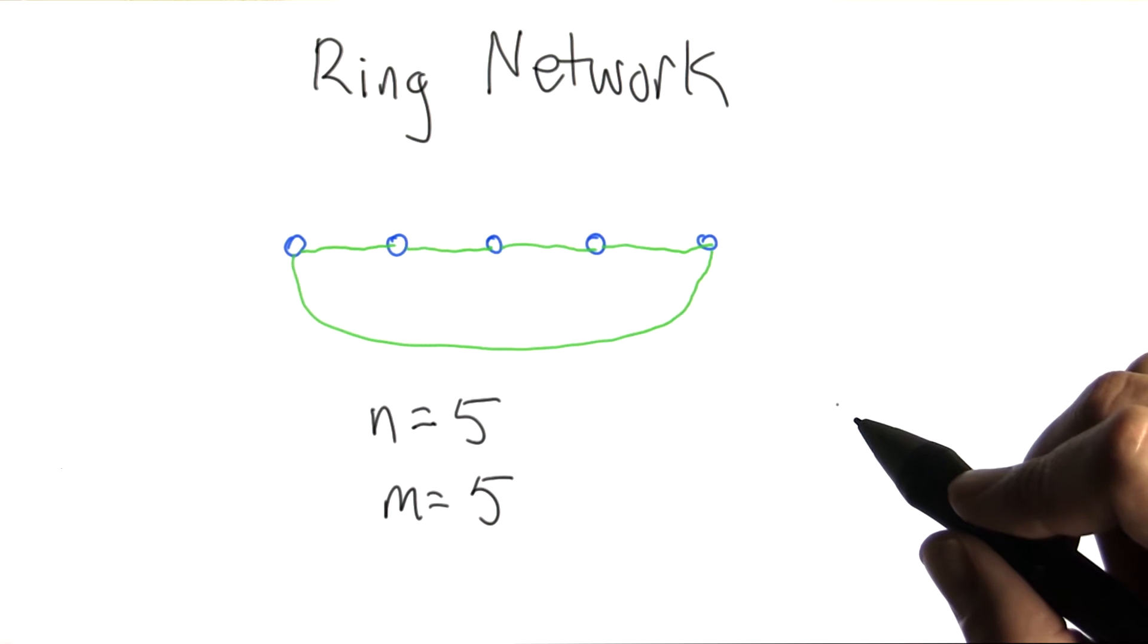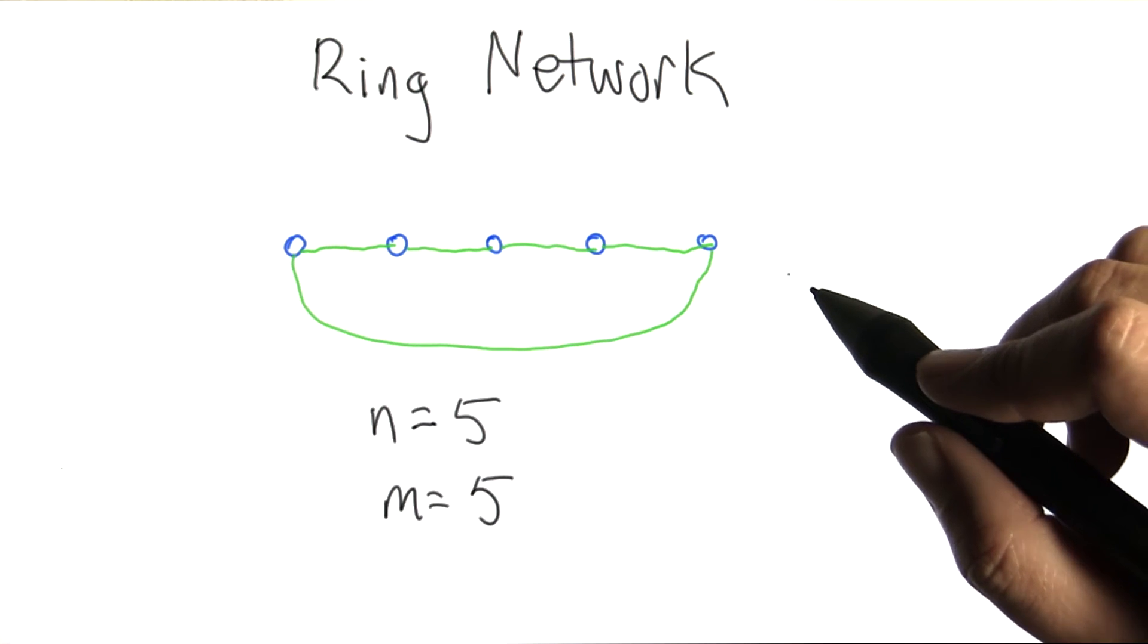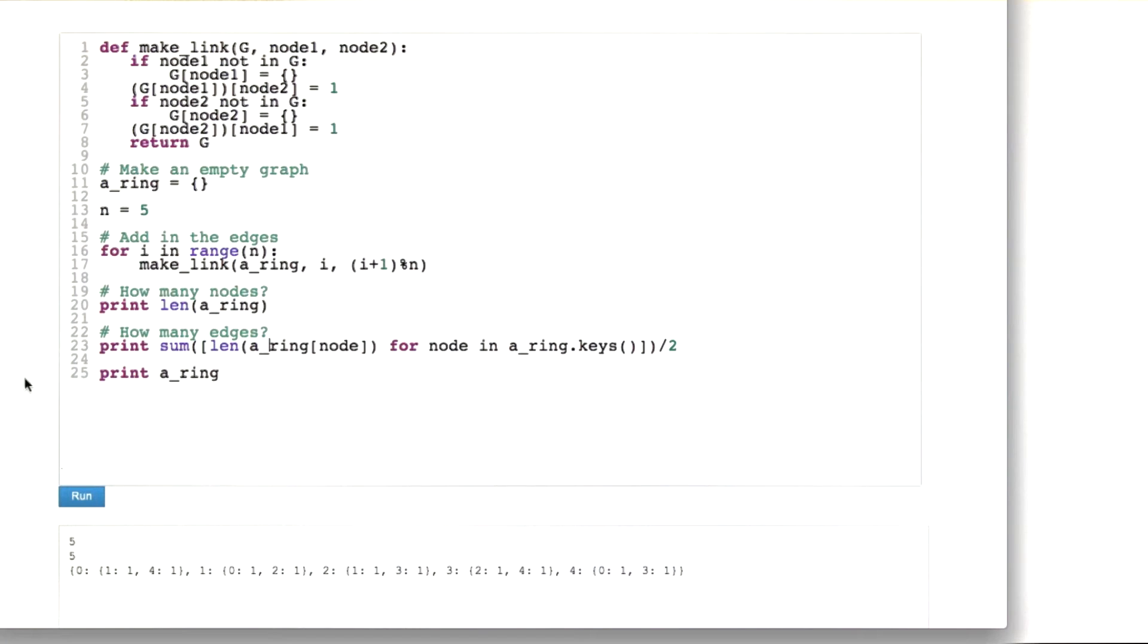One thing that might be useful to do at this point is to look at what ring network like this might look like as a piece of code. For the purposes of this course, I'm going to represent graphs as dictionaries of dictionaries. The way that that works is, let's take a look here. So what we're going to do is make a graph. We're going to call it a ring. We set n equal to 5, and we initialize the ring to be an empty dictionary. So just brace, brace.